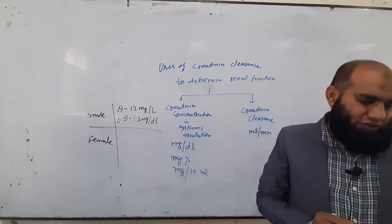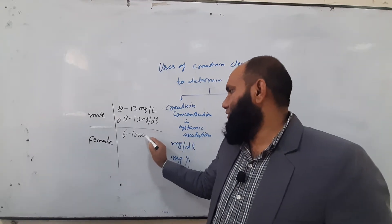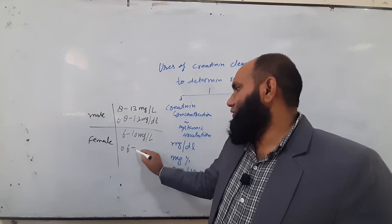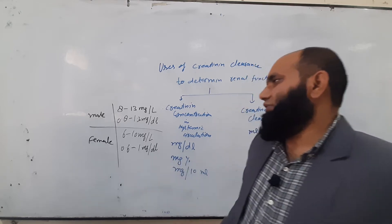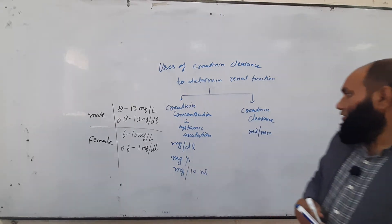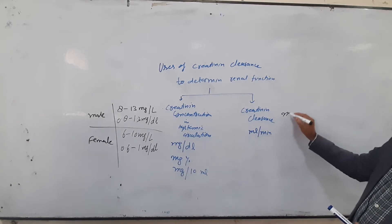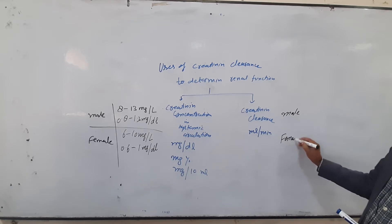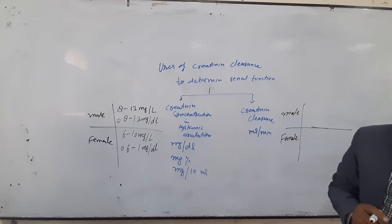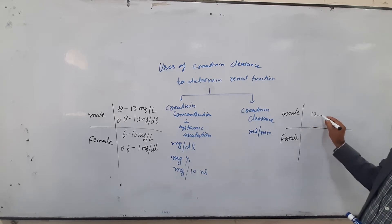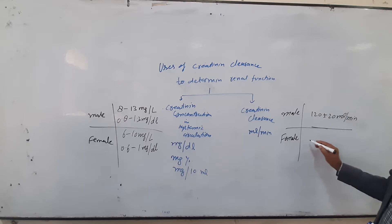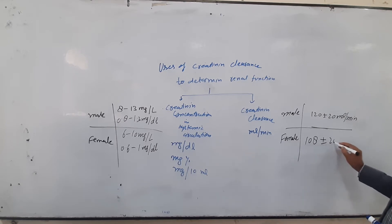In the case of females, the creatinine concentration is 6 to 10 milligram per liter, or 0.6 to 1.0 milligram per deciliter. For creatinine clearance, in the case of males it is 120 ± 20 ml per minute, and in the case of females it is 108 ± 20 ml per minute.